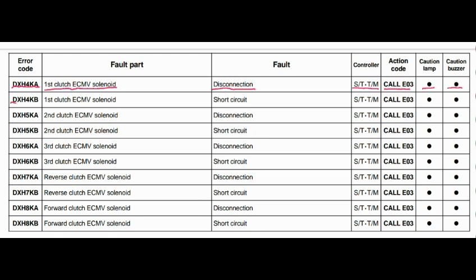Error code DXH4KB. The faulty part is the first clutch ECMV solenoid. The fault is a short circuit. The steering and transmission controller is related to this fault. Action code is E03, caution lamp will blink, and caution buzzer will beep.